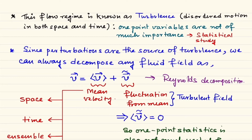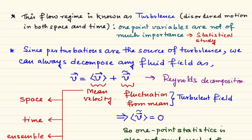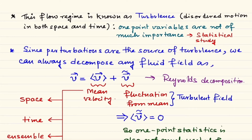In Reynolds decomposition, you decompose velocity into two parts: the mean velocity, which is the ensemble average, and the fluctuation — the instantaneous value minus the ensemble average. Theoretically it is more proper to talk in terms of ensemble average, but in practice it is much easier to take space averages or time averages, because in practice you only have one system. For example, if you study turbulence in a river, you cannot create a thousand identical rivers simultaneously.